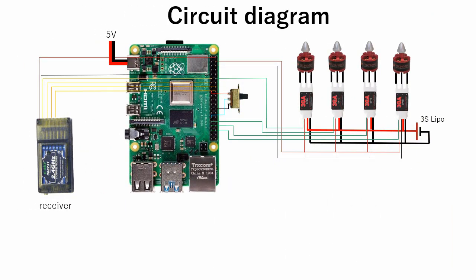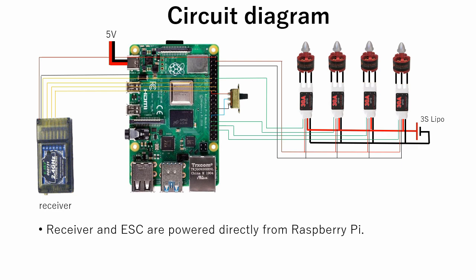This is a circuit diagram. We supply 5 volts from an external power source for Raspberry Pi. Also, from the power ports of Raspberry Pi, we supply 5 volts to the receiver and ESC. Motors are powered with a 3-cell LiPo. The switch is required for safe initialization of the ESC. Since we are programming the controller ourselves, it is very important to consider safety measures to avoid the machine running out of control.